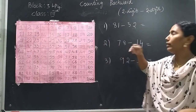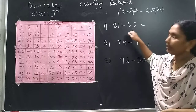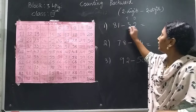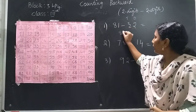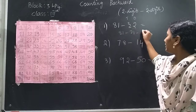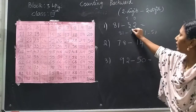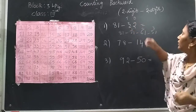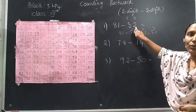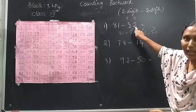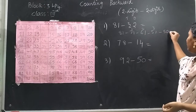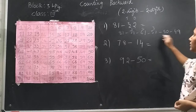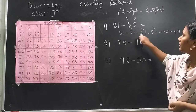Now we will see how to calculate mentally. 81 minus 32 — 1's and 10's place. Don't forget to put the place value. From 81, how many steps do I move backward? 81 to 71, 61 and 51 — that is 3 steps, because in the 10's place I have 3.